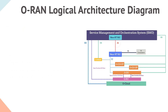Next let's discuss the A1 interface, which is between the non-RT RIC function in the SMO and the near-RT RIC. A simple way to understand the A1 interface is that when non-RT RIC performs optimizations of the RAN network functions, it produces policies to be consumed by near-RT RIC components, and the A1 interface is used to manage those policies from non-RT RIC to near-RT RIC.